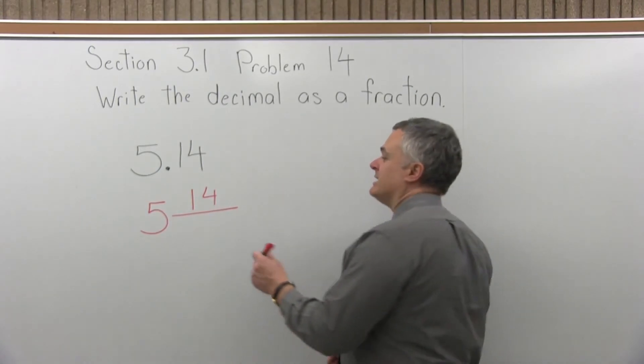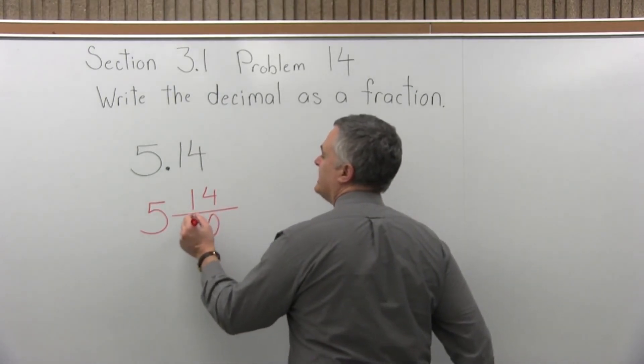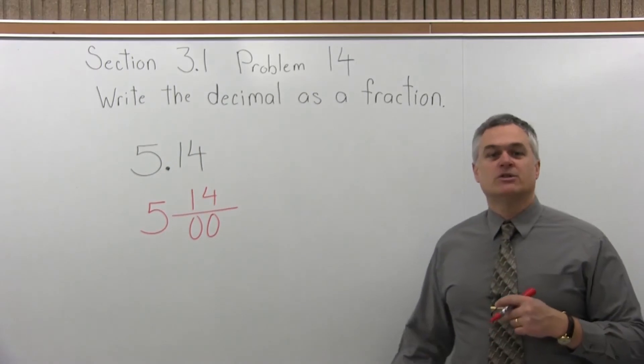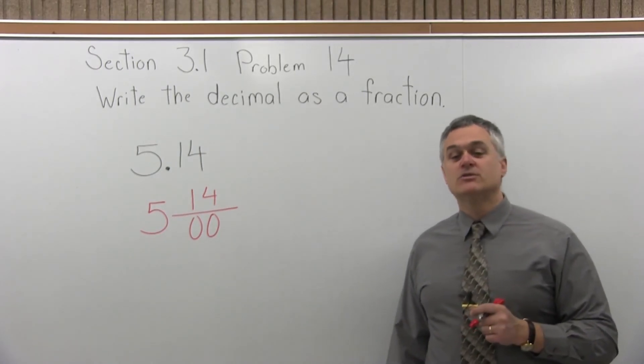Step two, put a zero under each digit that's in the numerator. The numerator has two digits, so the denominator gets two zeros.